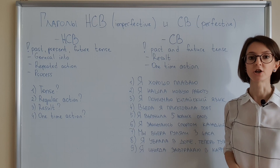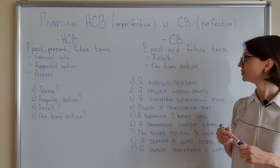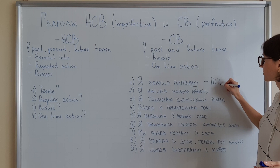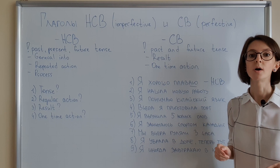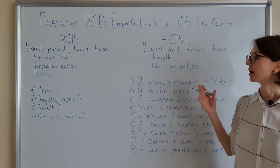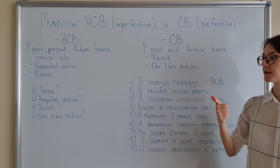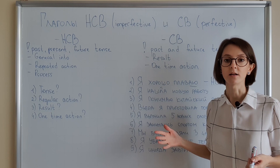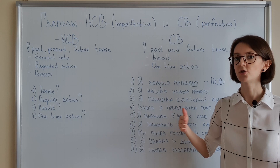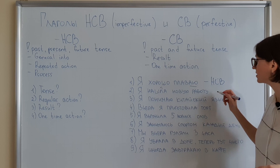First sentence: Я хорошо плаваю. The first thing you notice is that this is present tense, and this is general information about myself — so this is NSV. Second sentence: Я нашла новую работу. This is past tense, so from the tense alone we cannot determine the aspect. But you found a new job — you have a result. You have a new job as the result of your action. And it's a one-time action — you're not finding a job every day. So this is SV.